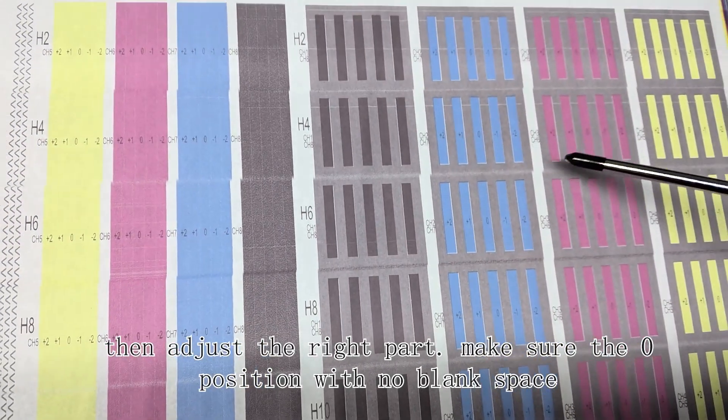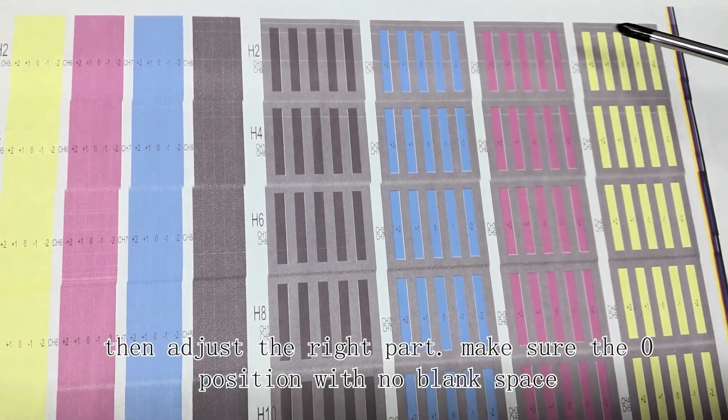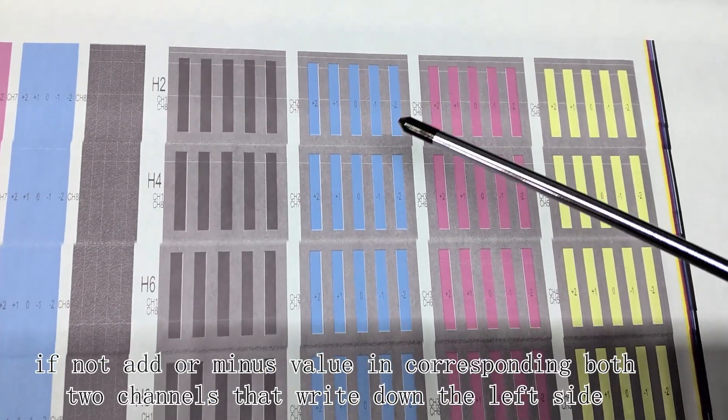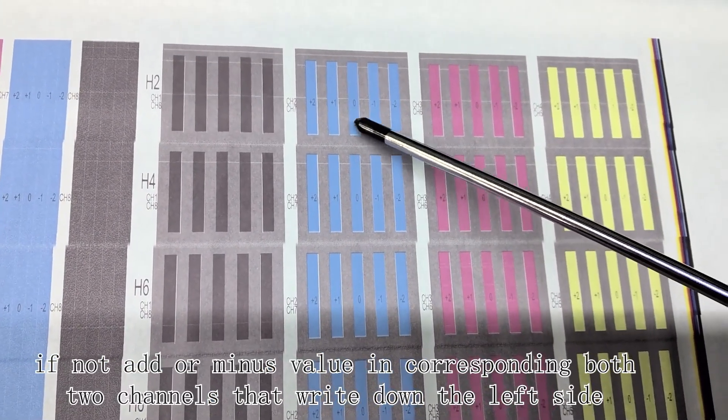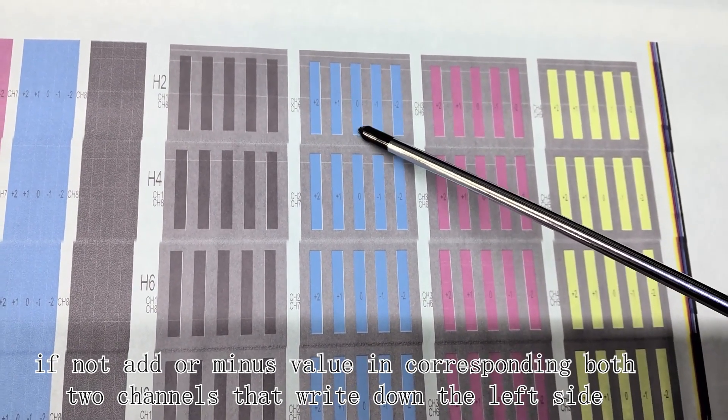Then adjust the right part. Make sure the position has no blank space. If not, add or minus value in both corresponding channels that are written down on the left side.